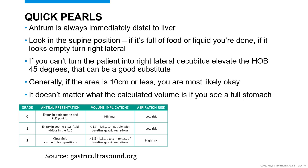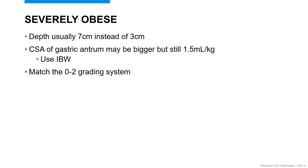For severely obese patients, the depth is usually 7 centimeters instead of 3 centimeters. The area of the gastric antrum may be bigger, but the threshold is still 1.5 mls per kilo of ideal body weight. You can still use both the qualitative and quantitative assessment models for the severely obese.